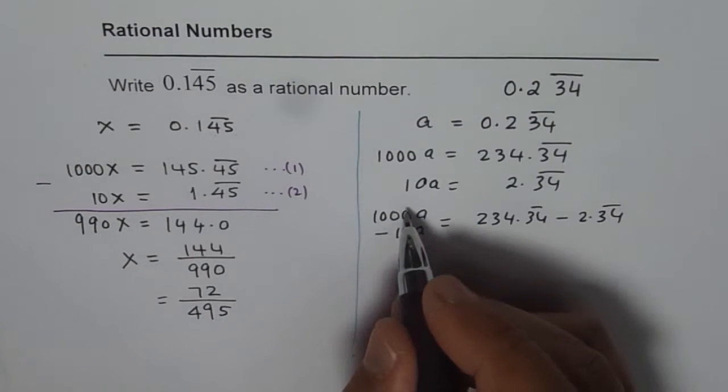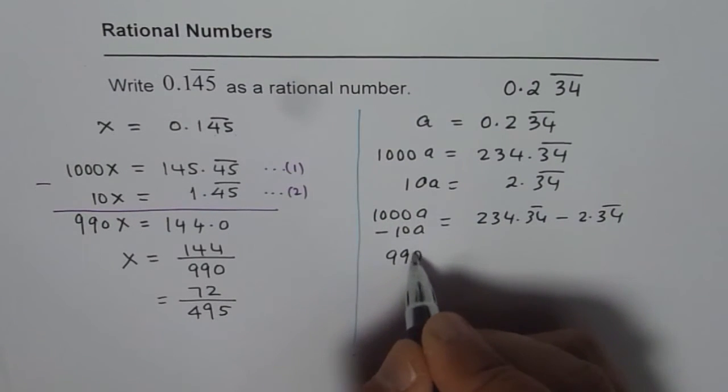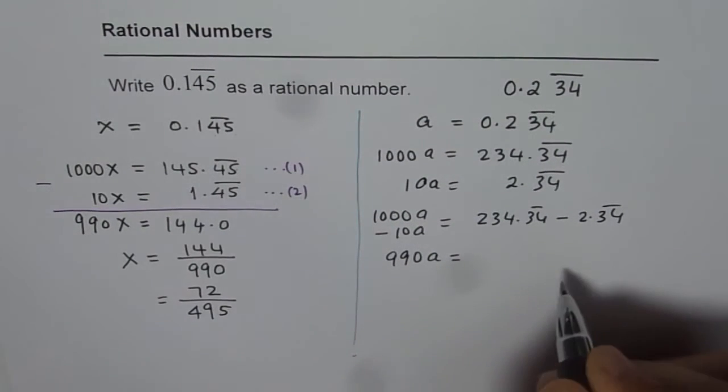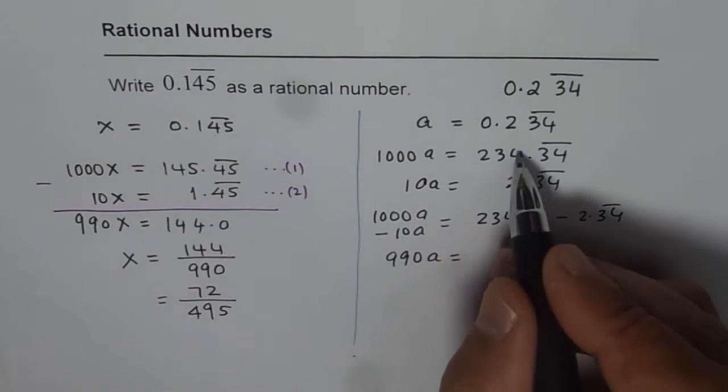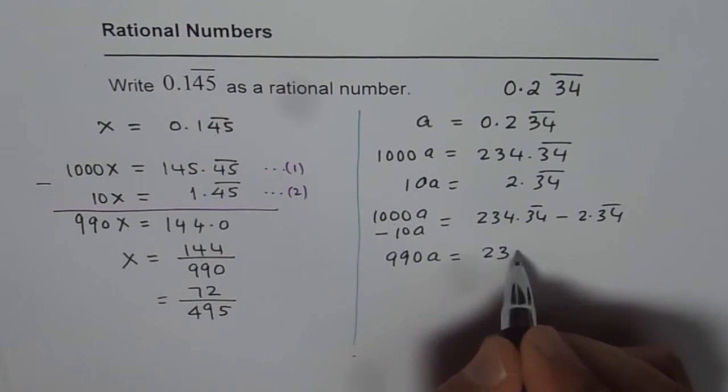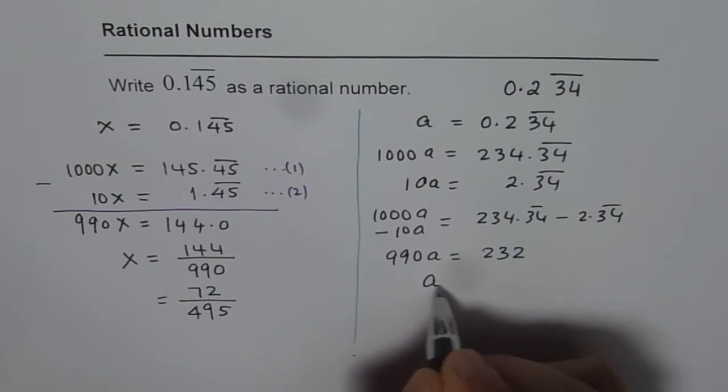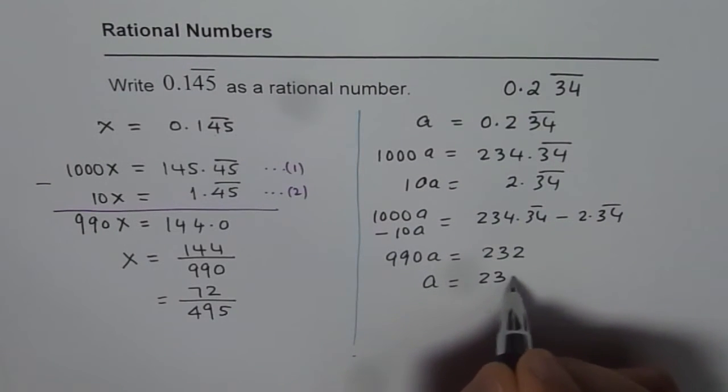Which is how much? Which is 990A equals, when you take away 2 from 4 you get 2. So 232. So A is equals to 232 divided by 990.